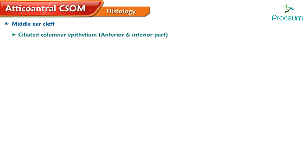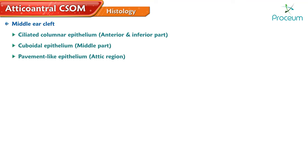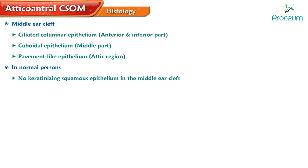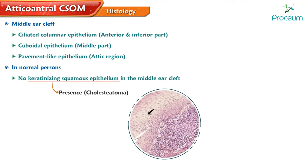Histology. The middle ear cleft is lined by ciliated columnar epithelium in the anterior and inferior part, cuboidal epithelium in the middle part, and pavement-like epithelium in the attic region. In normal persons, there is no keratinizing squamous epithelium in the middle ear cleft, and its presence is called cholesteatoma.